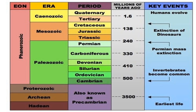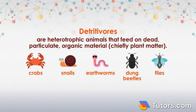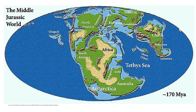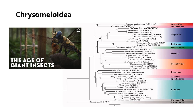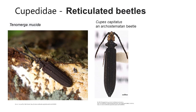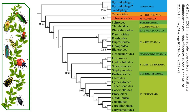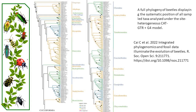Beetle genera were mainly saprophages or detritivores in the Permian and Triassic. During the Jurassic period, that is 210 to 145 million years ago, beetle diversity increased significantly with the rise of both carnivorous and herbivorous species. Chrysomeloidea beetles diversified, feeding on various plants including cycads, conifers, and angiosperms. While the Cupedidae family declined near the Upper Jurassic, early plant-eating beetles became more diverse.